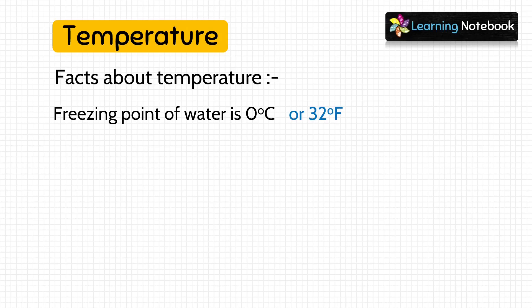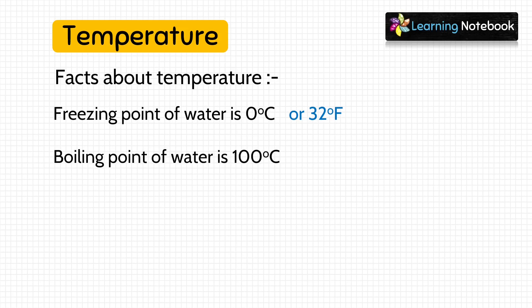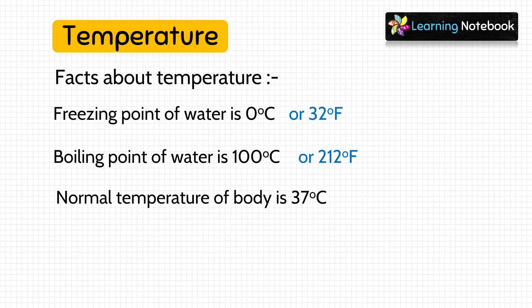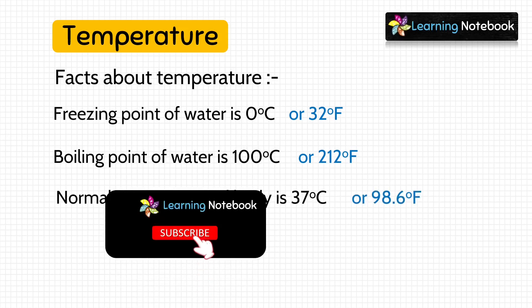Next, the boiling point of water is 100 degree Celsius — it means at this temperature, water turns into steam. In terms of Fahrenheit, it is 212 degree Fahrenheit. Lastly, the normal temperature of our body is 37 degree Celsius, and in terms of Fahrenheit, it is 98.6 degree Fahrenheit.